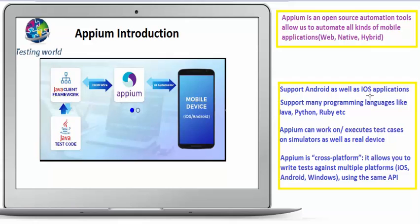A second advantage of APM is that it supports multiple programming languages. When automating mobile applications we can use different languages — it could be Java, Python, Ruby, C#, and a few others. So if you are not comfortable with Java you can choose Python, Ruby, or C#. APM supports multiple programming languages for automating Android or iOS applications.